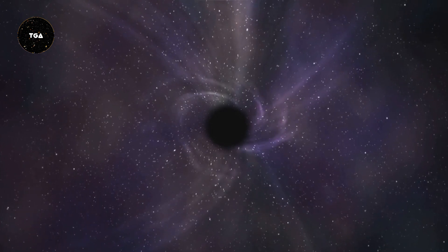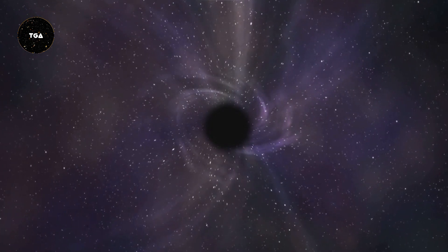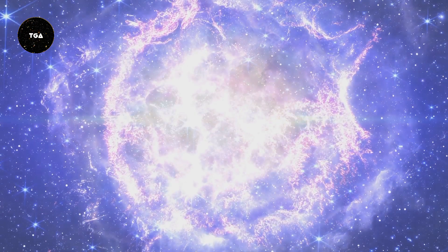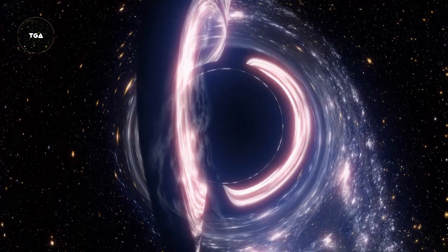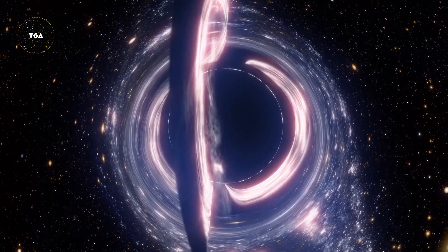Black holes form when massive stars collapse under their own gravity at the end of their life cycles. There are three main types of black holes: Stellar, intermediate and supermassive. Stellar black holes form from the remnants of massive stars. They are typically about 10 to 20 times the mass of our sun.